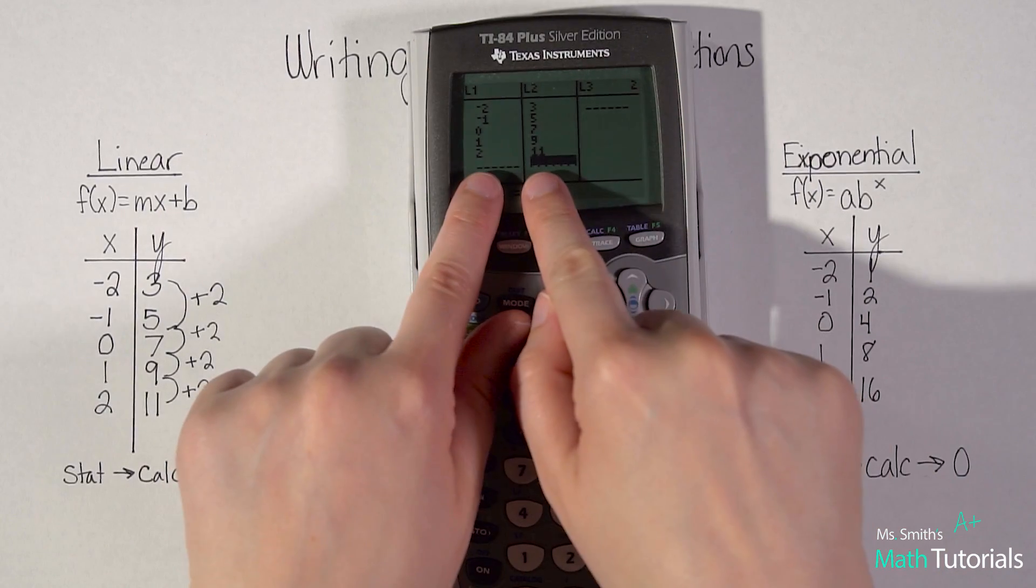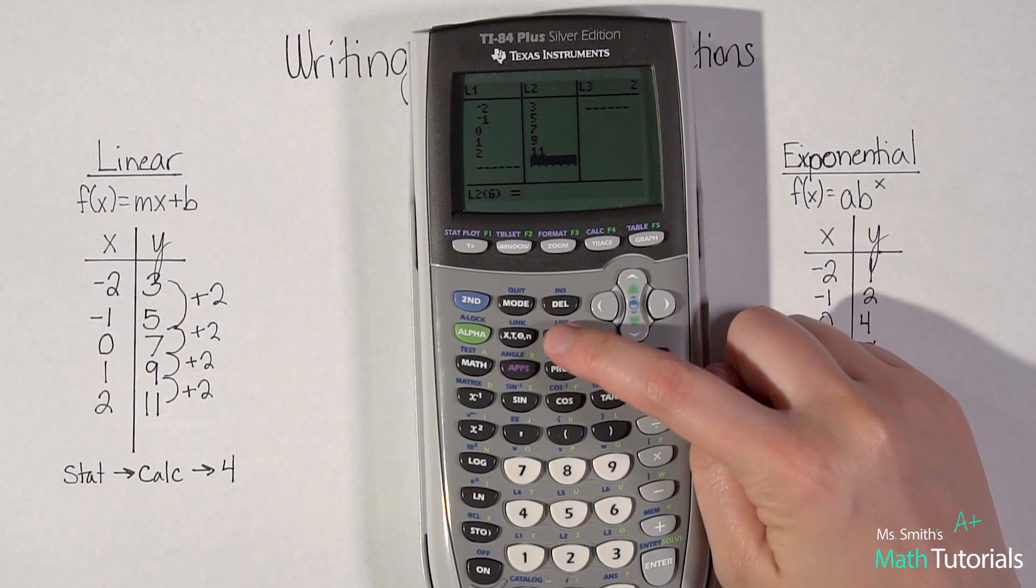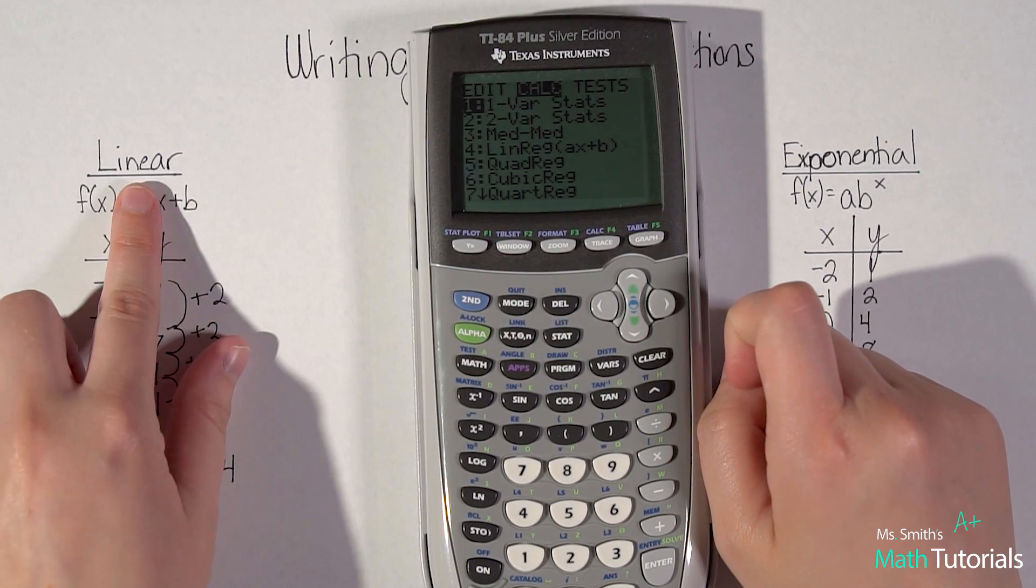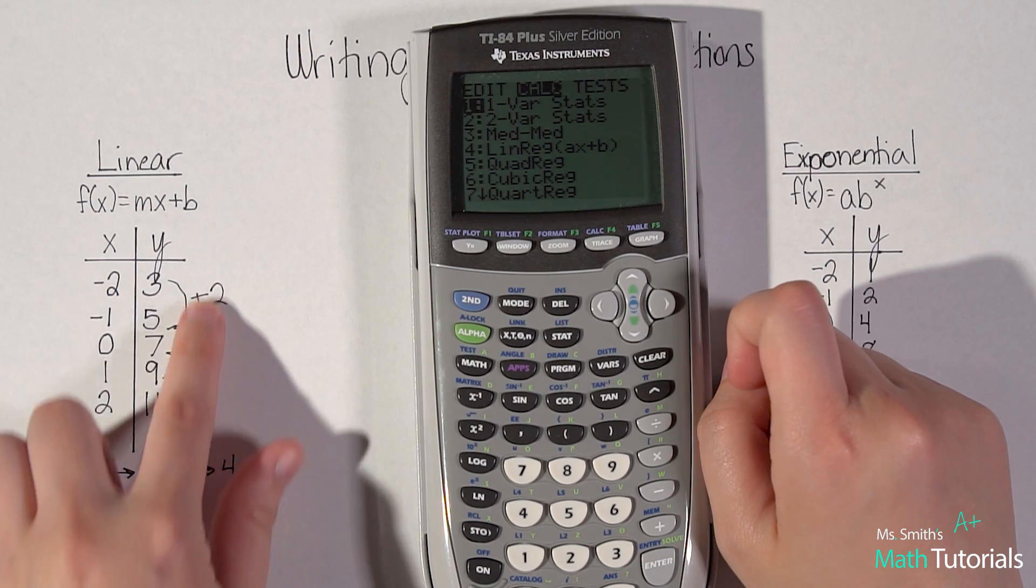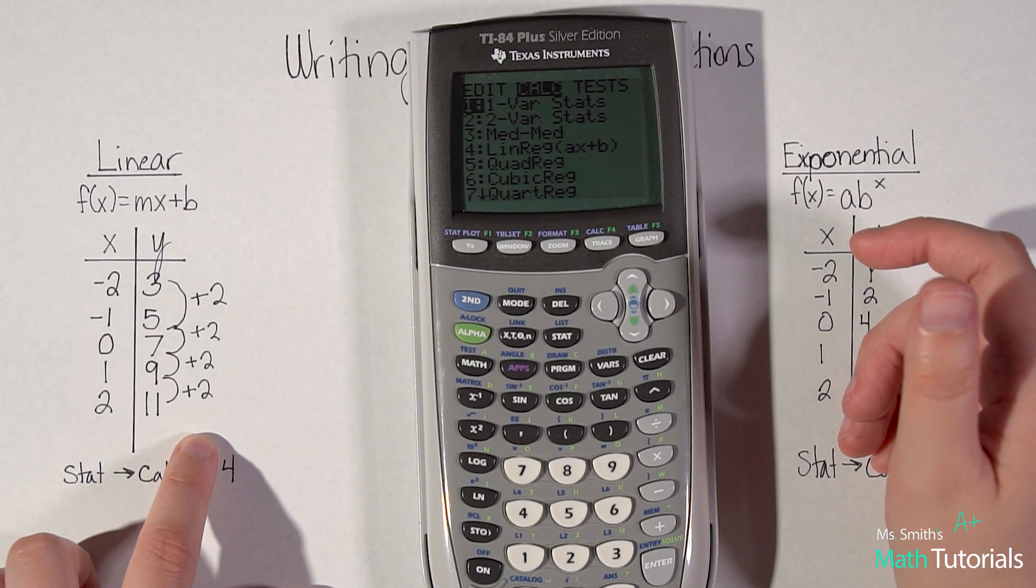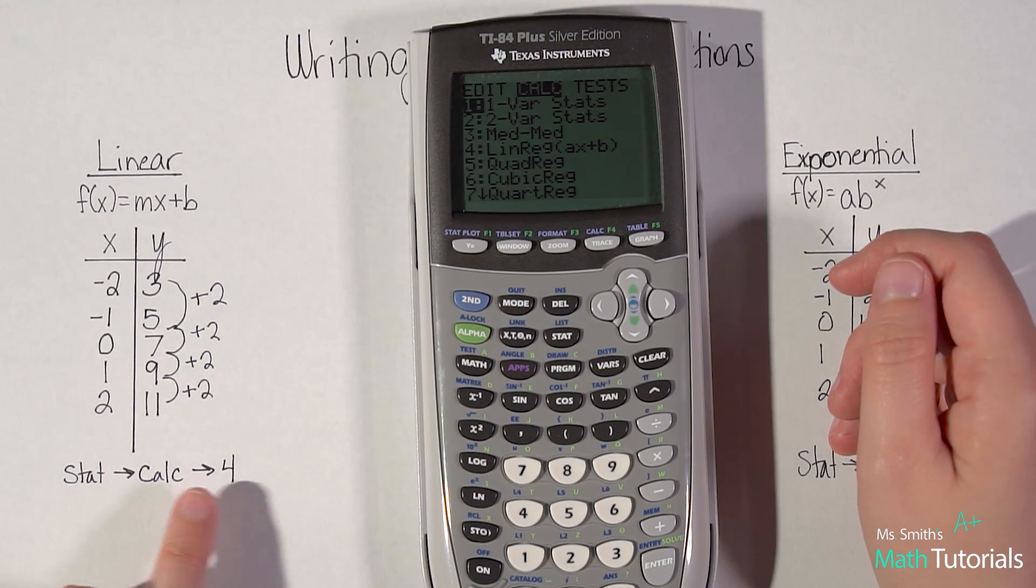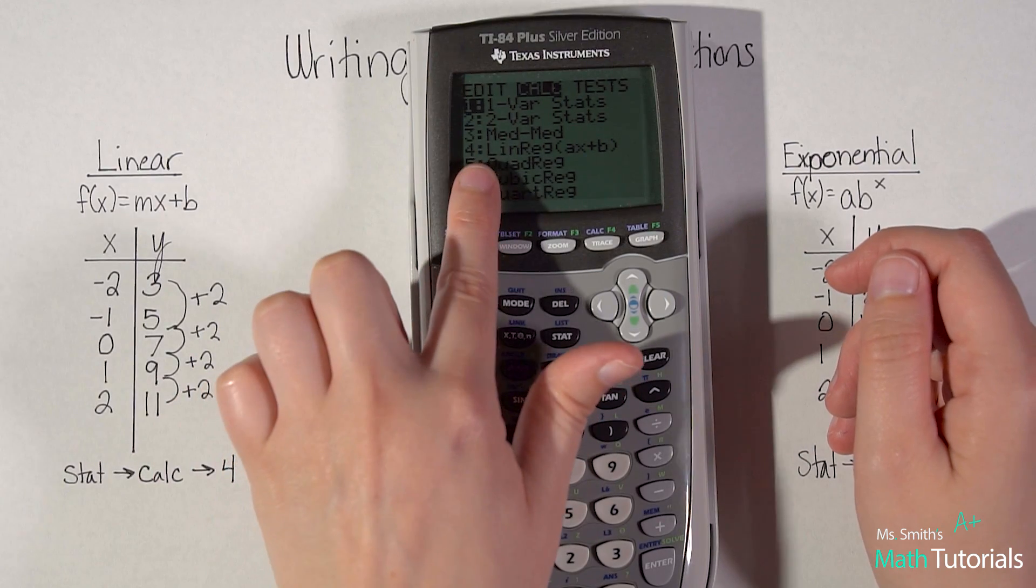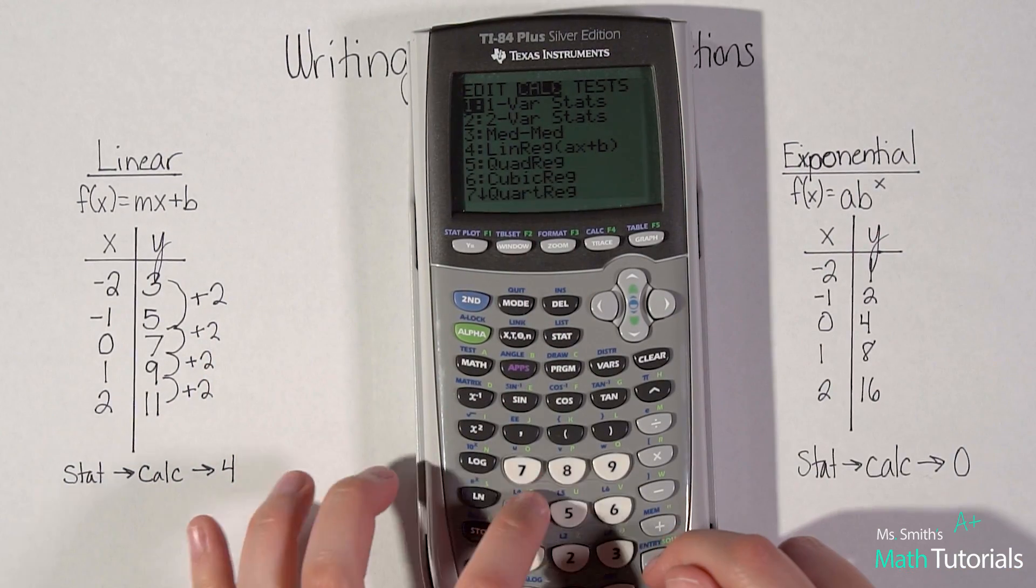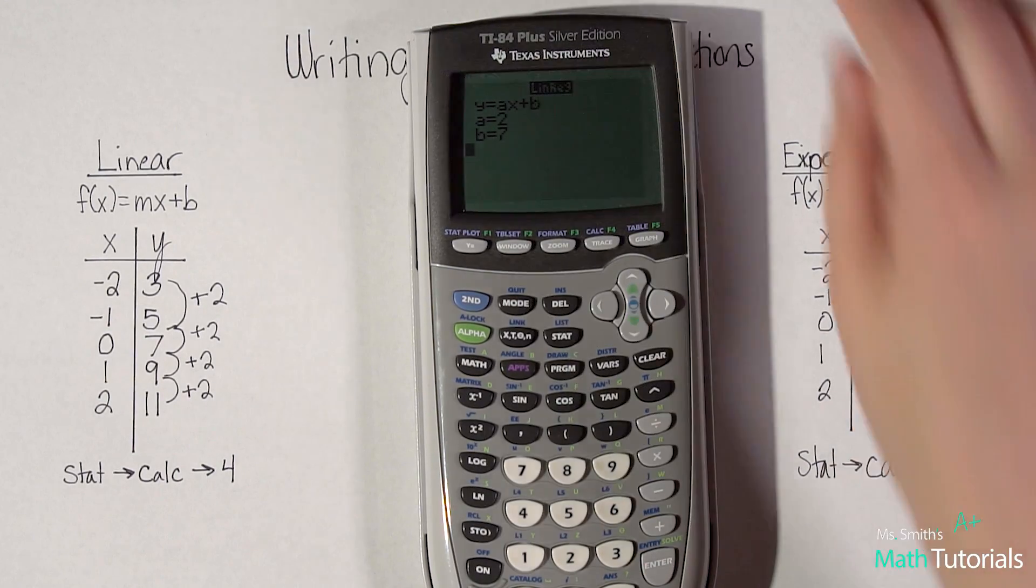Make sure they're even, look back through, make sure you didn't make any mistakes. I'm going to go to stat, calc. Since I already established that this is a linear regression, it's a linear pattern, I'm going to use that function. I've noted that here, stat, calc, four. It's the fourth one is the linear. I'm going to hit four, enter through all this.